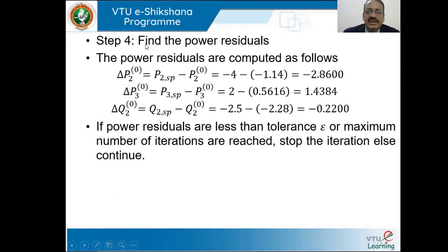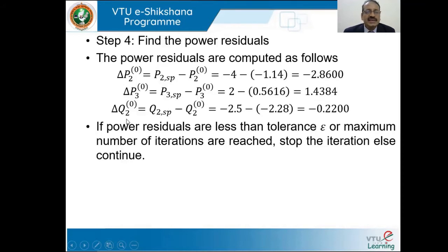In step 4, we compute the power residues. ΔP2⁰ = P2 specified − P2⁰ = −4 − (−1.14) = −2.86. ΔP3⁰ = P3 specified − P3⁰ = 2 − 0.5616 = 1.4384. ΔQ2⁰ = Q2 specified − Q2⁰ = −2.5 − (−2.28) = −0.22.